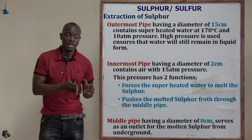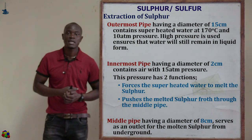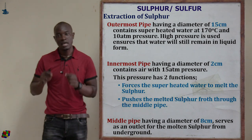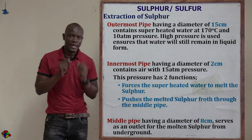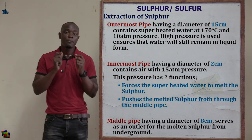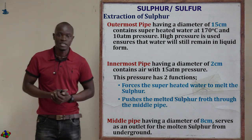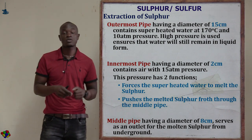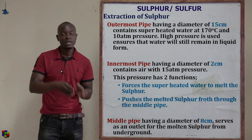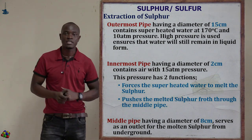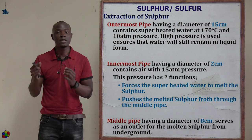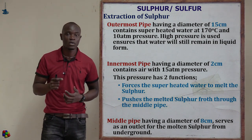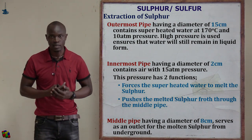The high pressure of 10 atmospheres ensures that water remains in liquid state, since pure water normally boils at 100 degrees Celsius. The superheated water's function is to melt the sulfur found underground.